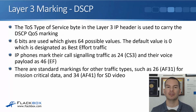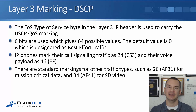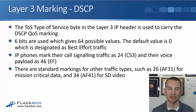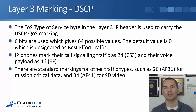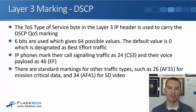Next is DSCP, differentiated services code point. The CoS marking is carried in the layer 2 header; the DSCP value is carried in the layer 3 IP header. In the IP header there's a single byte called the TOS (type of service) byte, and DSCP uses the first six bits of that byte. Six bits gives us 64 possible values. The default is zero — DSCP 0 is designated for best effort traffic and doesn't get any special service.